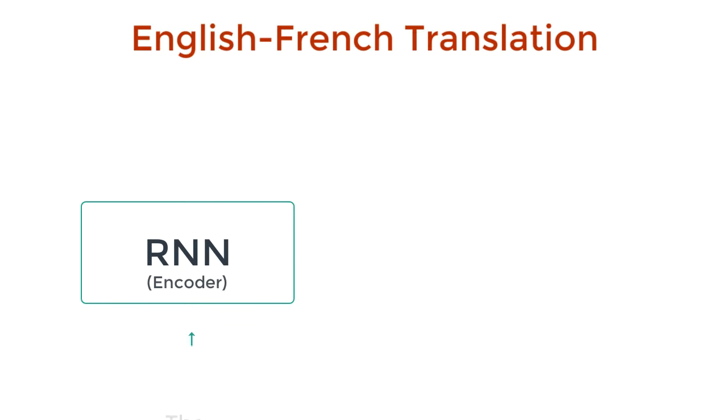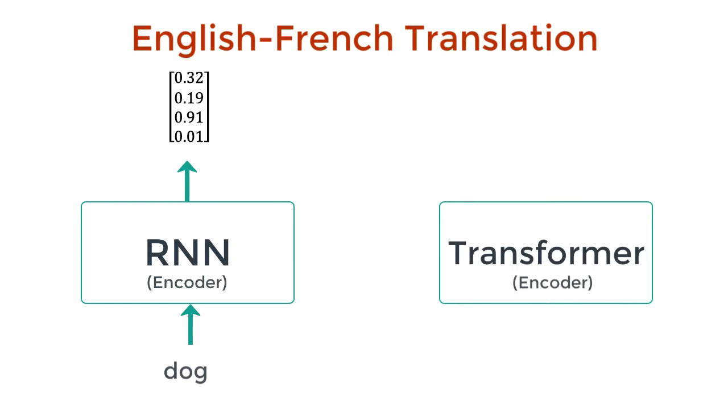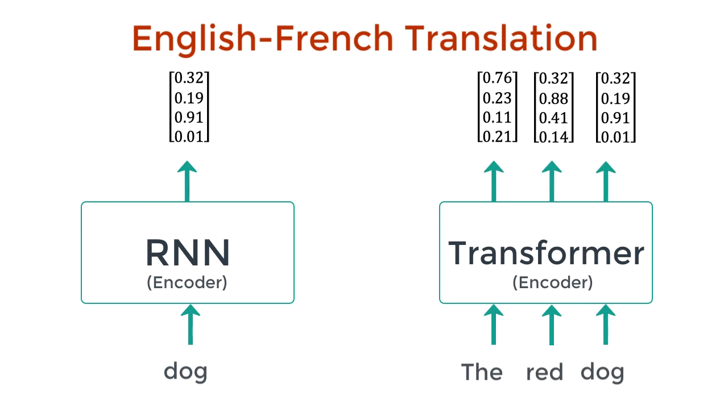With an RNN encoder, we pass an input English sentence one word after the other. The current word's hidden state has dependencies in the previous word's hidden state. The word embeddings are generated one time step at a time. With a transformer encoder, on the other hand, there is no concept of time step for the input. We pass in all the words of the sentence simultaneously and determine the word embeddings simultaneously.